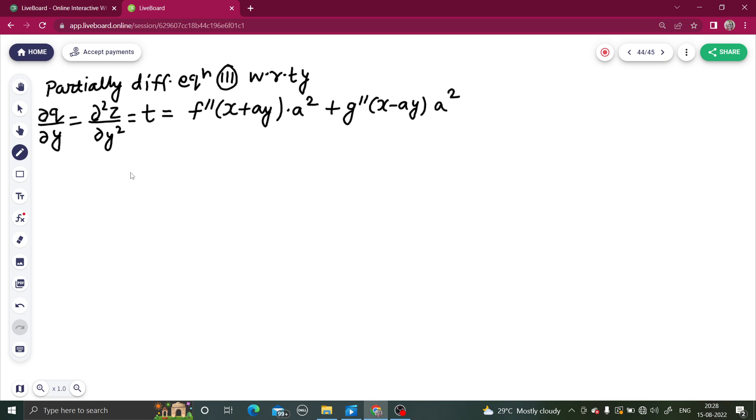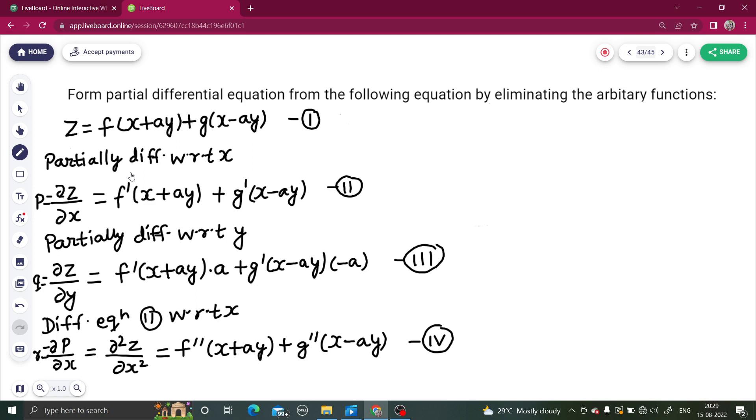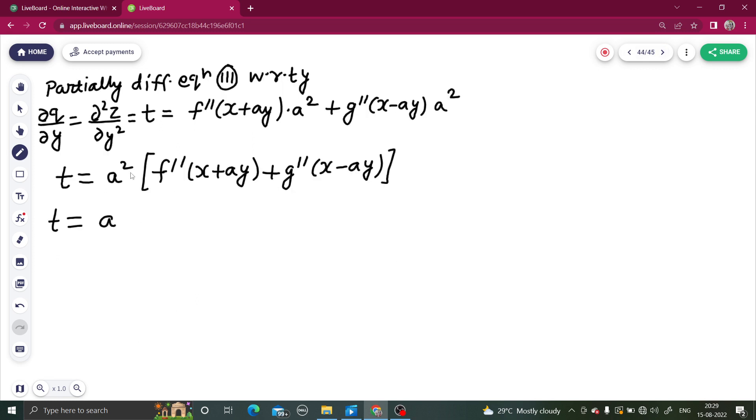Your t - you can directly write t equals to, if you take a square common inside, what you will get is f double dash (x plus ay) plus g double dash (x minus ay), and this is nothing but from previous equation, from equation number 4, this is r. So t equals to a square r.